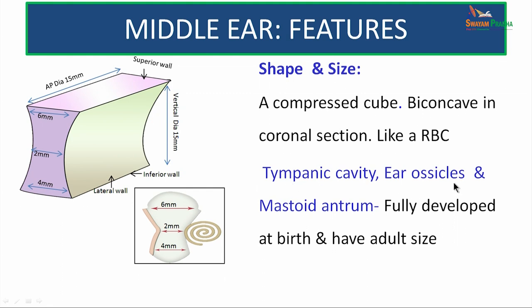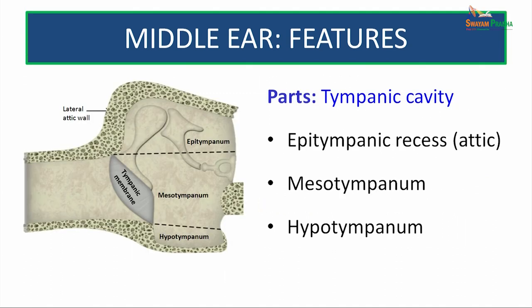The tympanic cavity, ear ossicles, and mastoid antrum are fully developed at birth and have adult size. Considering the tympanic membrane as the hallmark region: the epitympanic recess — also referred to as the attic — is the space above the tympanic membrane and contains the head of the malleus and the incus (head and short process). The mesotympanic region is in line with the tympanic membrane and contains the handle of the malleus, the long process of the incus, and the stapes. There is also a small portion below the tympanic membrane referred to as the hypotympanum.